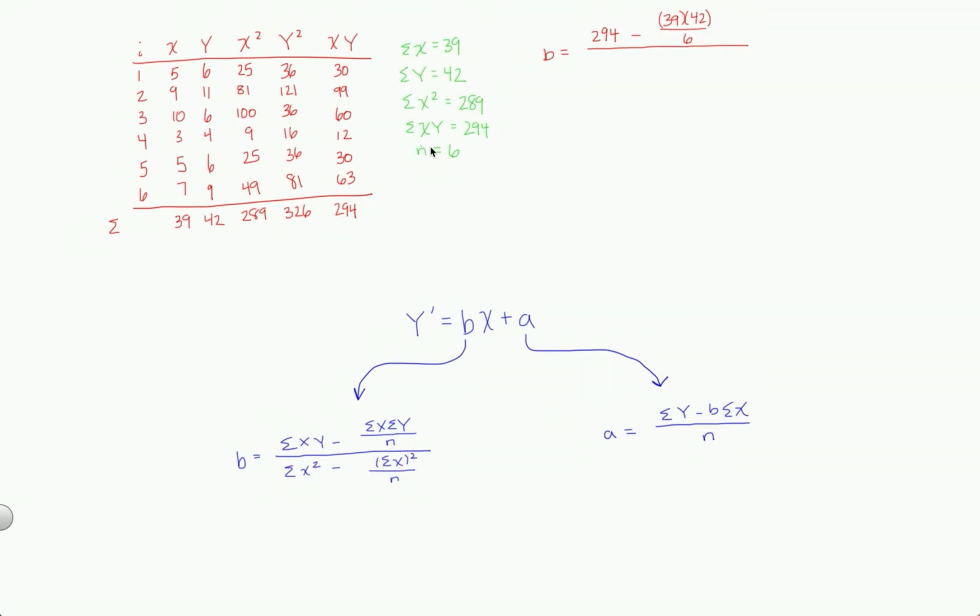So sigma x squared with no parentheses refers to the 289 that we have right here. So 289 minus, and then sigma x in parentheses squared refers to sigma x 39 squared. So we're going to have 39 squared over, again, n is 6.